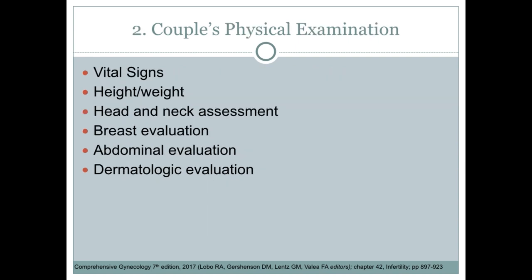For the couple's physical exam, we obtain vital signs, height, weight, and BMI. We do a head and neck assessment and inspect for the presence of exophthalmos that can be associated with hyperthyroidism, the presence of epicanthus, lower implantation of ears and hairline, and webbed neck which can be associated with chromosomal abnormalities such as Turner syndrome. We also exclude thyroid gland enlargement or nodules, which may indicate thyroid dysfunction.